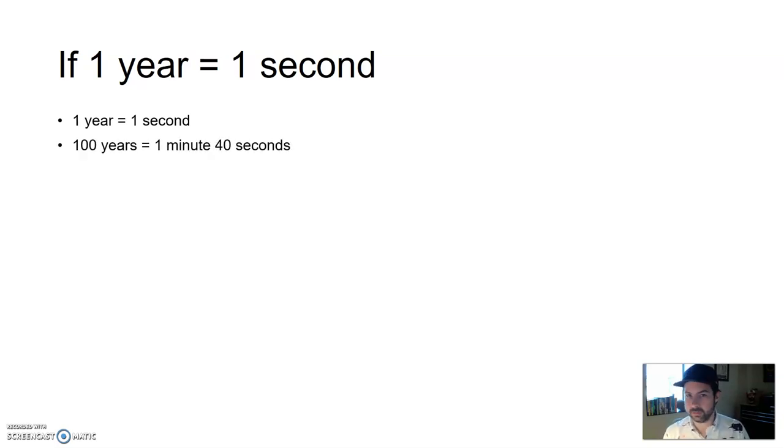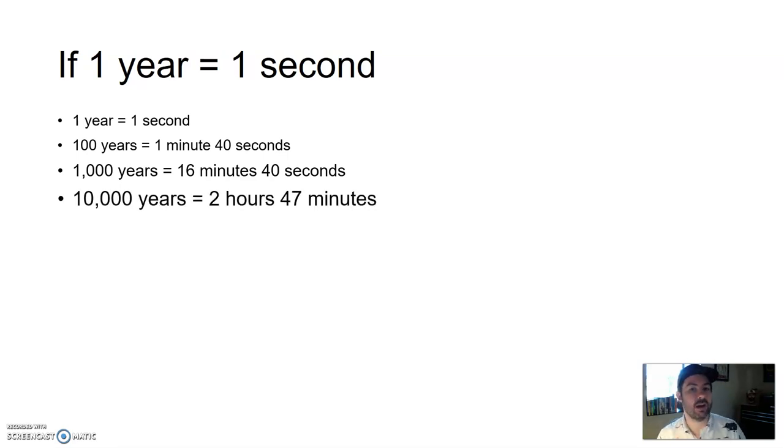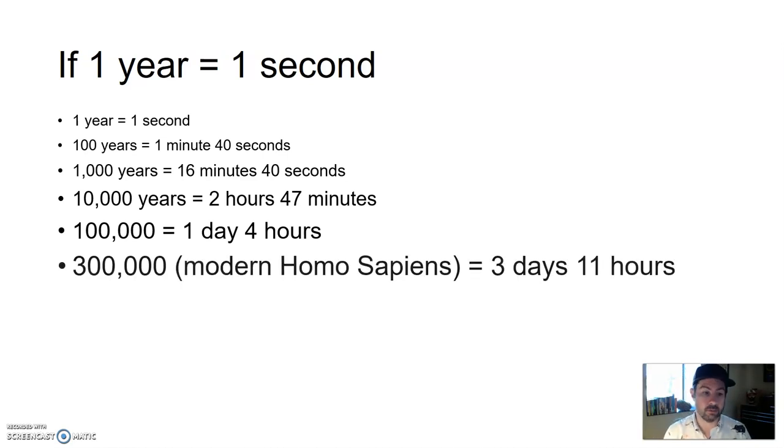A hundred years would be a hundred seconds. That's a minute and forty seconds. A thousand years would be sixteen minutes and forty seconds. Ten thousand years, two hours, forty-seven minutes. A hundred thousand years, that's a day and four hours, twenty-eight hours.